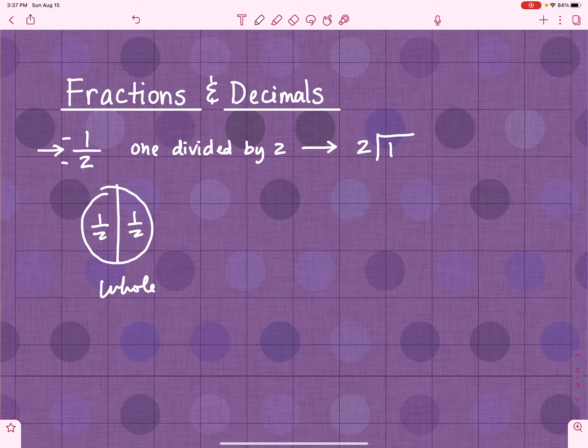Well, two won't go into one, so I've got to draw a decimal and then add some zeros. Alright, so now two goes into ten. See, the decimal comes up here. Five times two is ten. Okay, now that that's zero, I didn't really need those other zeros. So one half is equivalent to 0.5.